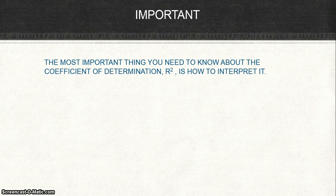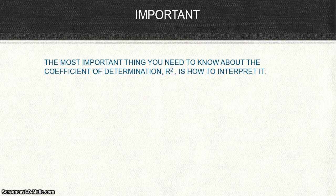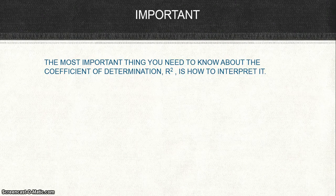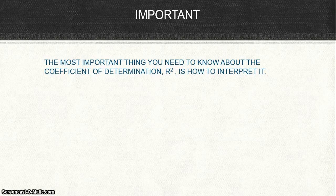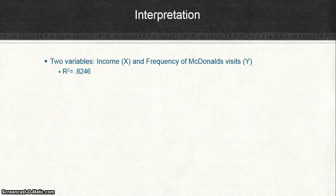And the most important thing AP Statistics wants you to know is not even how to calculate it, but how to interpret it. The most important thing you need to know about the coefficient of determination, r squared, is how to interpret it. And I'm going to show you how to do that right now.